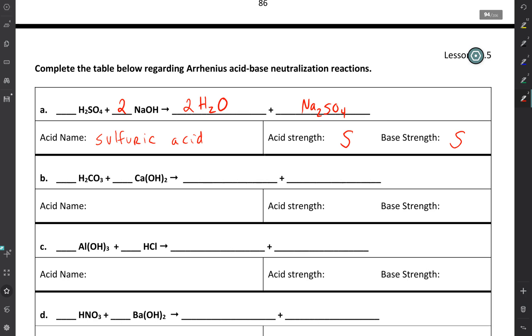So pause the video, try letter B on your own, and then we'll walk through it together. Okay, we've got H2CO3, which is carbonic acid.